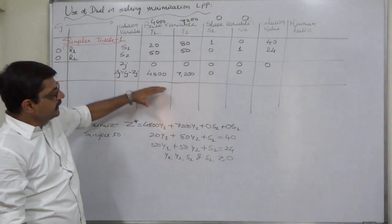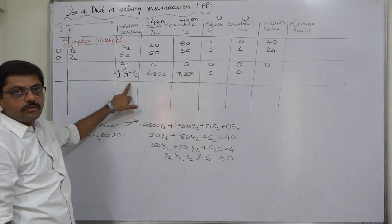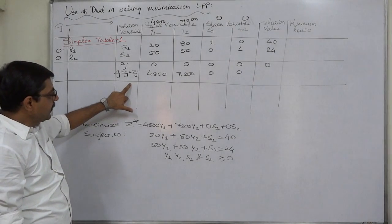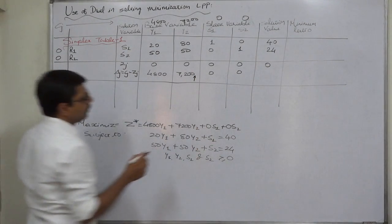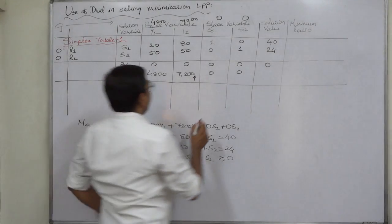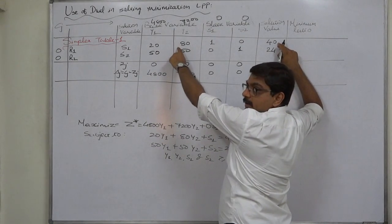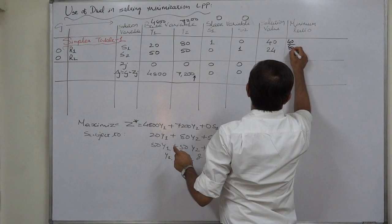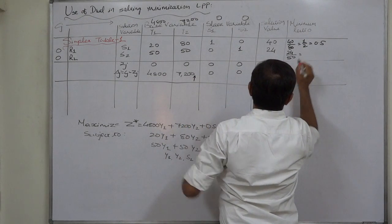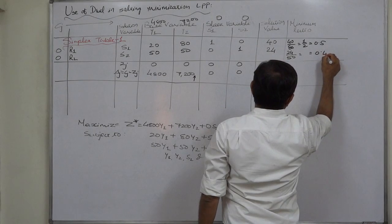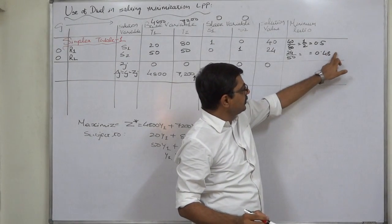The delta values are not all 0 or negative, so this is not the optimal solution of the maximization problem. We have to proceed and select the column with the highest delta value — that is the column of y2. y2 becomes the key column. Now divide the solution values by the respective elements in the key column: 40 divided by 80 = 0.5, and 24 divided by 50 = 0.48.